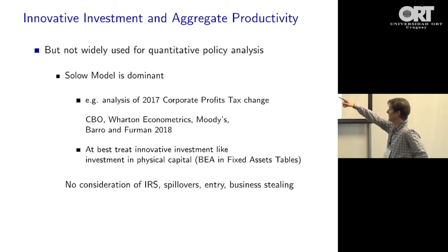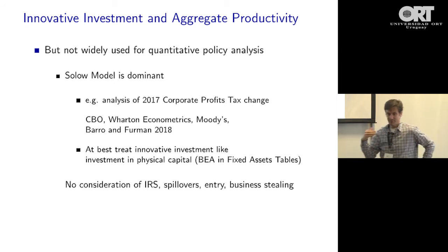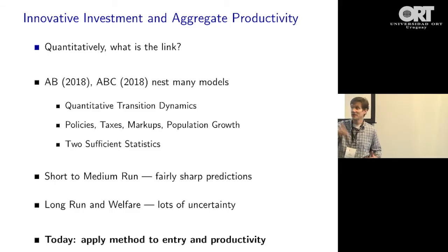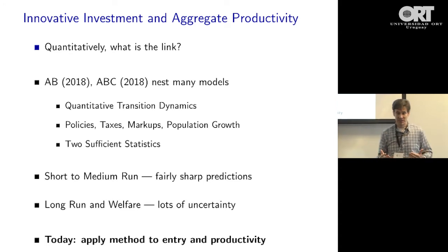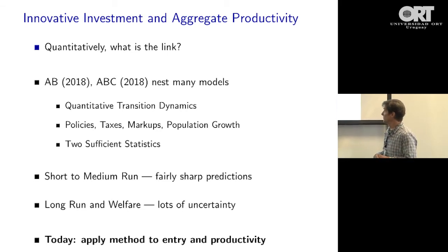The forthcoming paper is focused on this question: suppose through some change in policies we get firms to invest more in innovation — we raise their innovation intensity or spending on innovative activities, say, by 10%. What do we think should happen to the growth rate of aggregate productivity? We end up boiling that down to two sufficient statistics: an immediate impact and a long-run impact. We argue you can discipline those sufficient statistics from the data and get fairly sharp predictions from a wide range of models for the short to medium run. The long run has a ton of uncertainty.